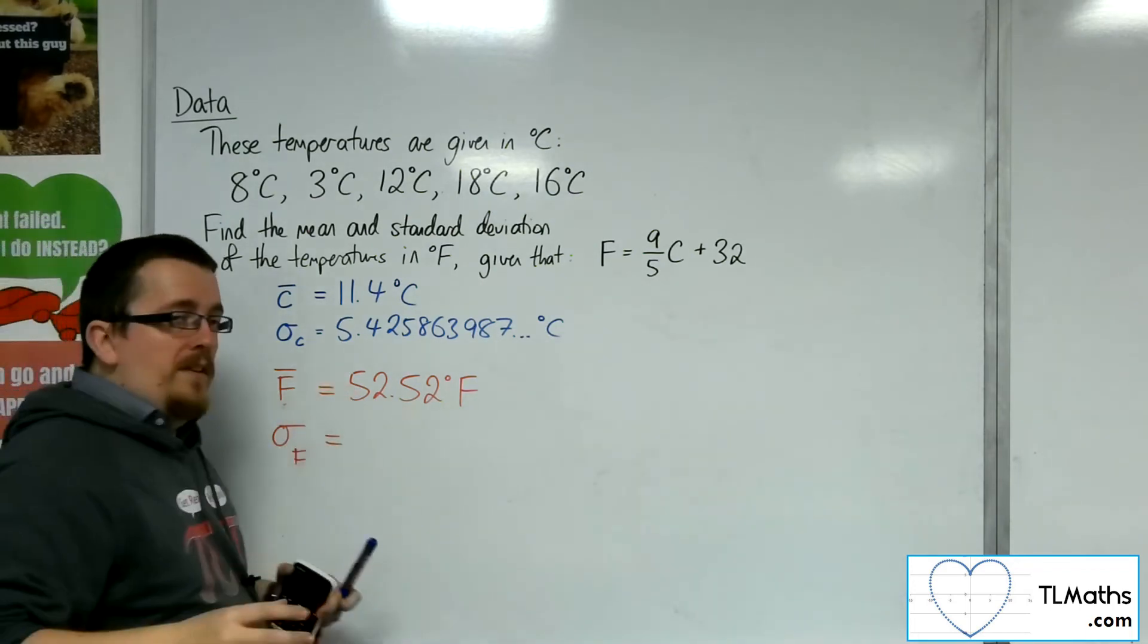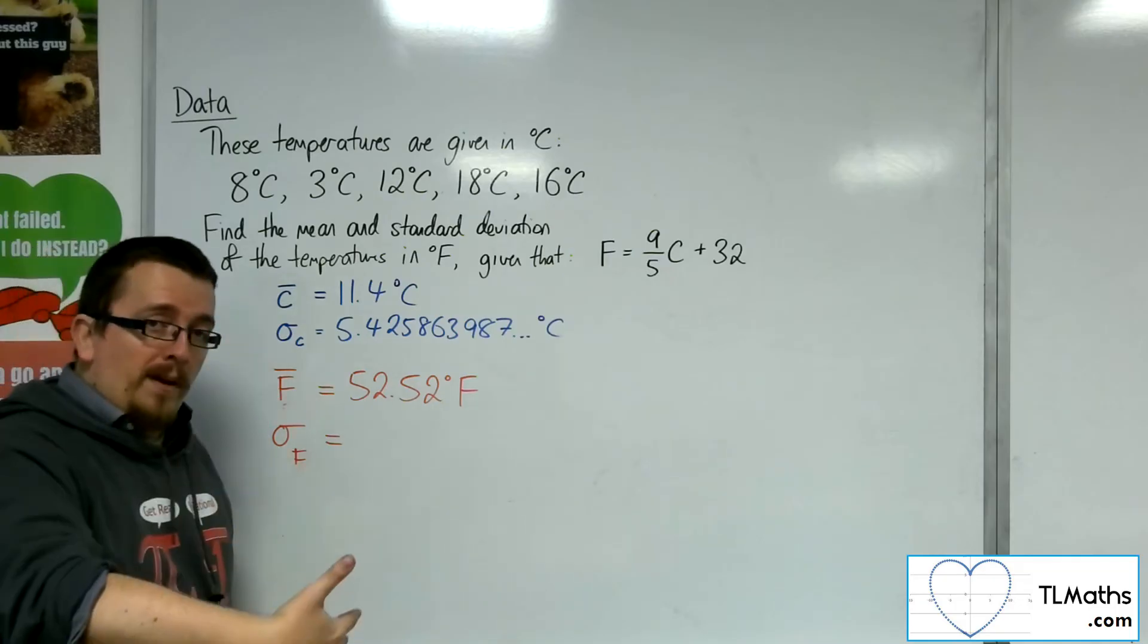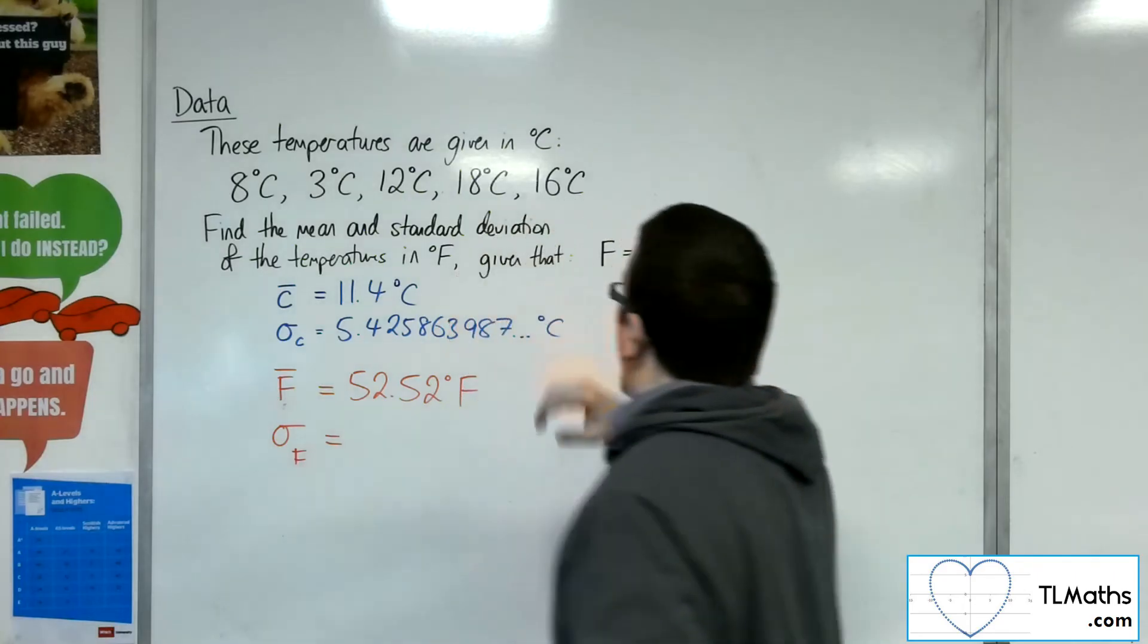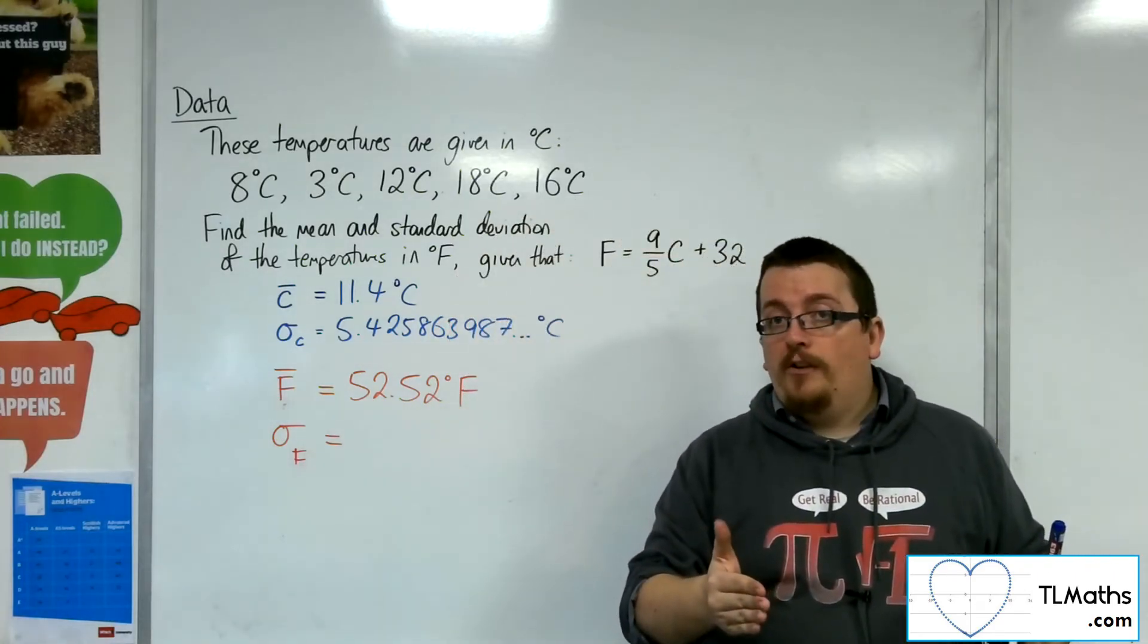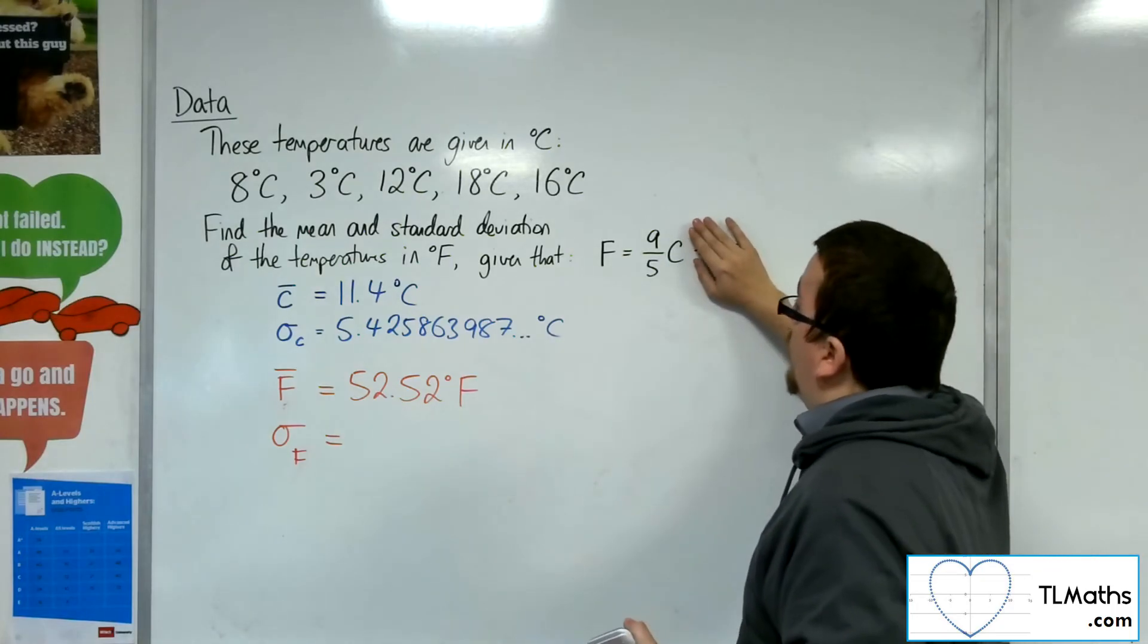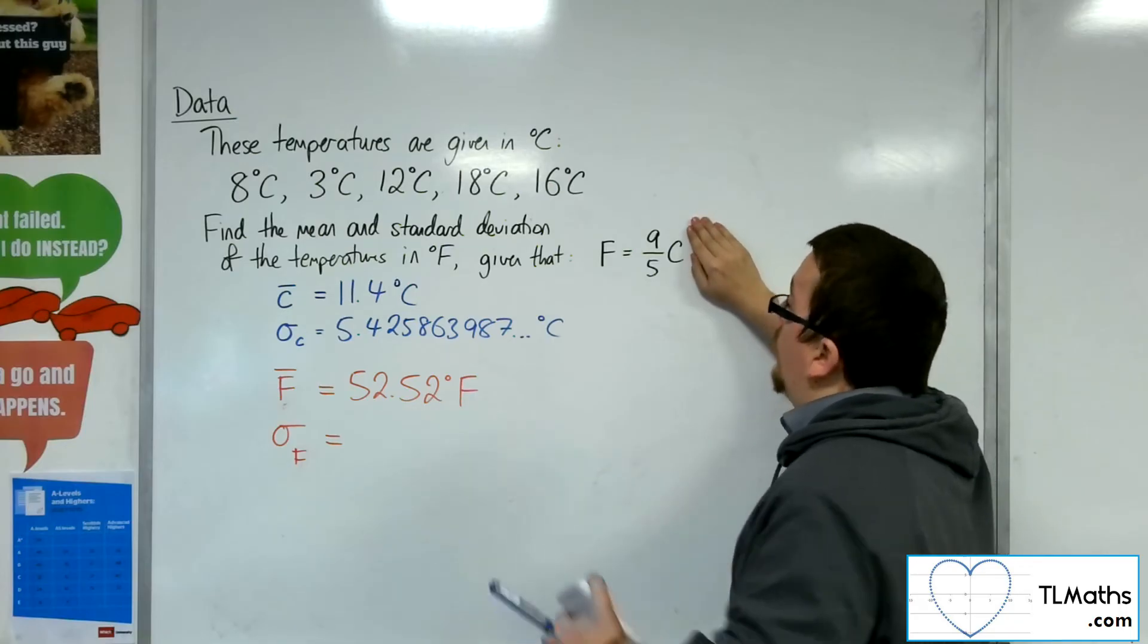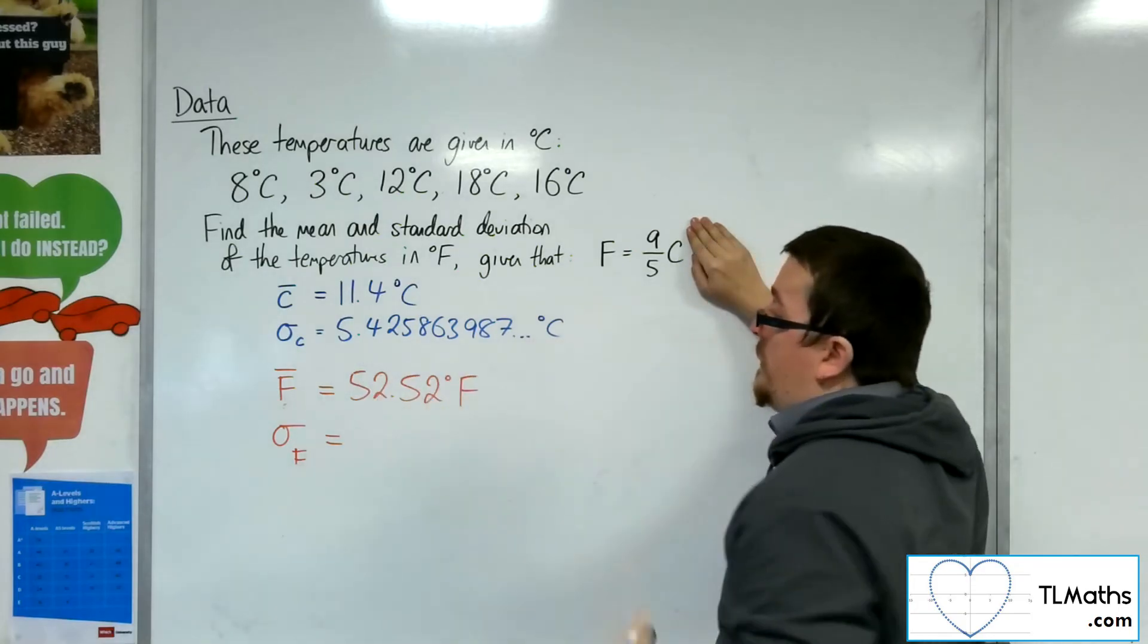Now, as for the standard deviation, the standard deviation is only affected by multiplication or division. The addition of the 32 here just moves the data along and so does not stretch out or shrink the set of data. And so the plus 32 doesn't make any difference for standard deviation. And you don't worry about it. All we want to do is 9/5 times the old standard deviation.